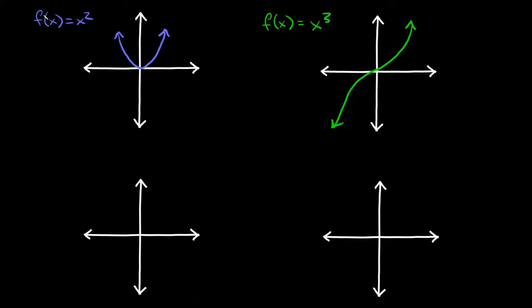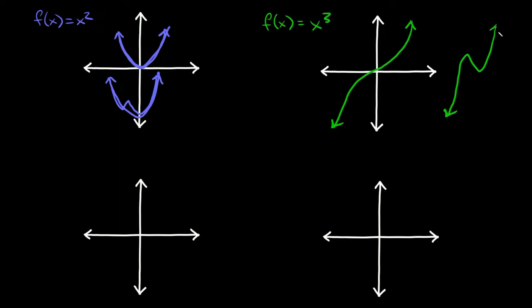The main thing to realize with f(x) = x² is the exponent — a two, which is an even number. Whenever you graph a polynomial function with an even numbered exponent, it's always going to look something like a parabola. It could have a blip in the middle, but we're more concerned with the ends of our function. Similarly, f(x) = x³ has an odd exponent, so it looks like a cubic curve. It could also have a blip in the middle, but both ends slope in the positive direction.